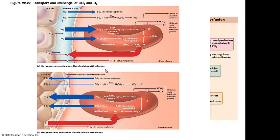Anybody ever hyperventilate? Too rapid of breathing — breathing out too much carbon dioxide too quickly. What's that going to do to your blood pH? It will rise and make your blood environment more basic — alkaline. That's called respiratory alkalosis. Not only does a change in pressure drive the movement of molecules, but so does chemistry.